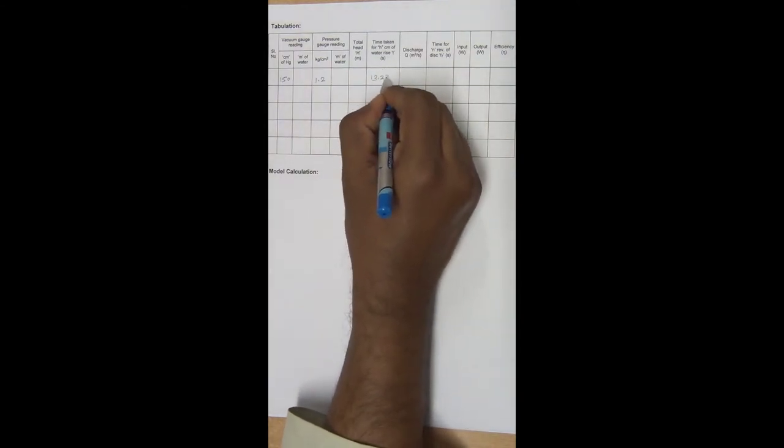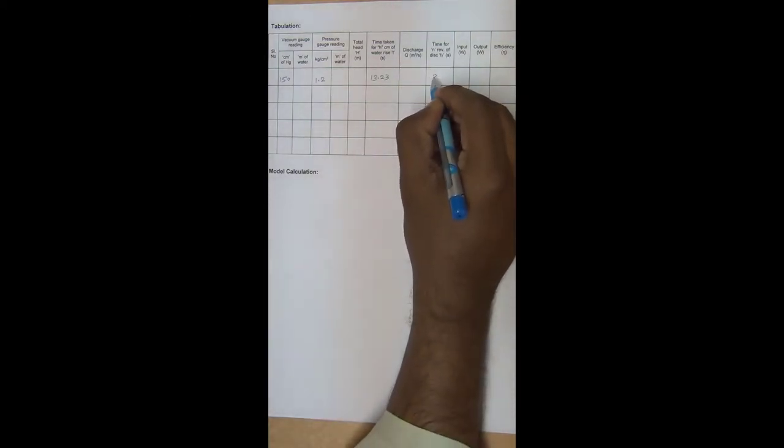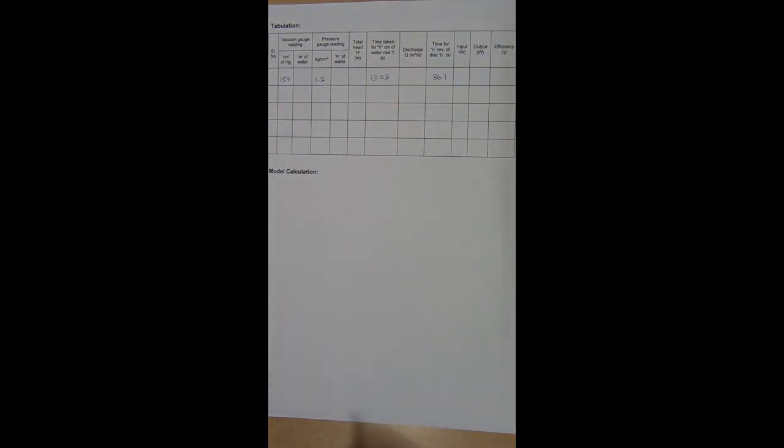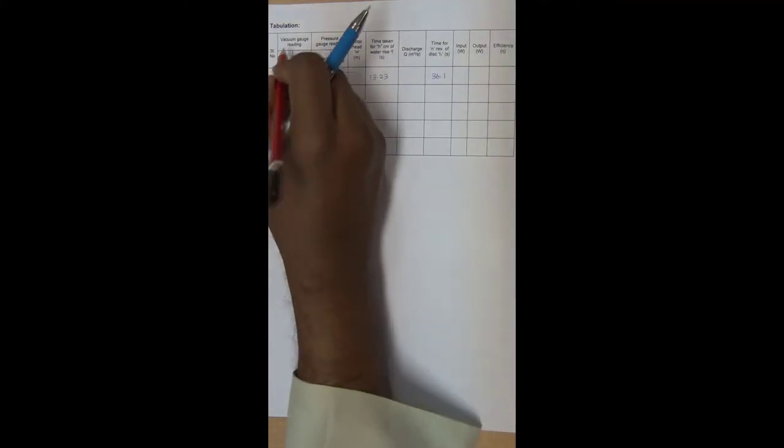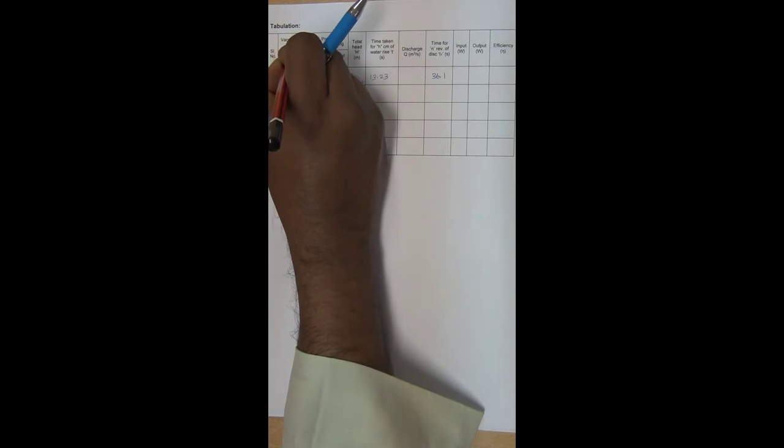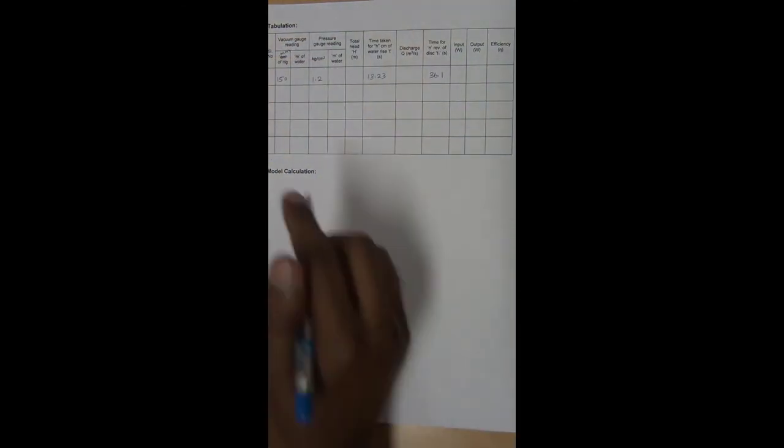Now we are going to do the calculation for this particular experiment. Again here it is given in terms of centimeter, it is not going to be in centimeter, it is going to be in terms of millimeter. So it is 150 mm of Hg. So like this we will be taking a set of readings, 5 set of readings.